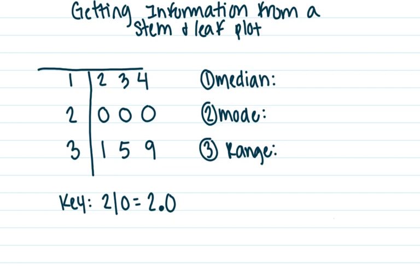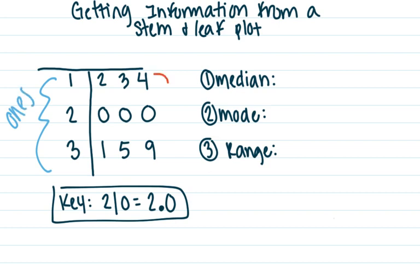Now, to pull some information off of here, first of all, make sure you check out the key. Our key is telling us that these numbers over here represents the ones place and that these numbers over here represents the tenths. So make sure that you realize that that key is telling us that that two line zero is not 20. It is actually 2.0, which is two, as we know. So it's telling us that we have ones for our stems and then we have tenths for our leaves.